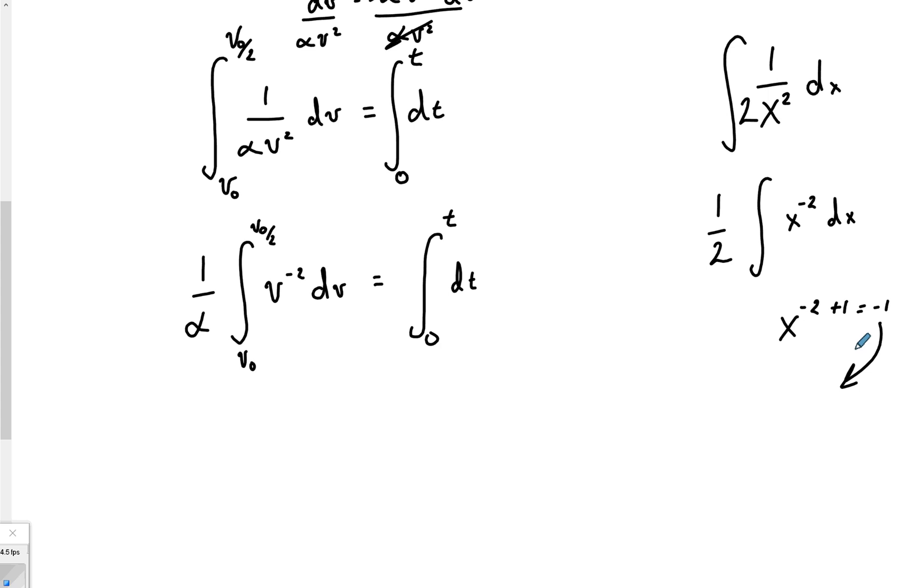We're going to add 1 and divide by it. Well, what's that become? Well, that becomes 1 over v negative. Because think about what we got. We got negative 2 plus 1 is negative 1, which v negative 1 means it's 1 over v. But we've got to also divide by that negative 1, which makes that negative.